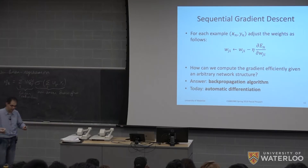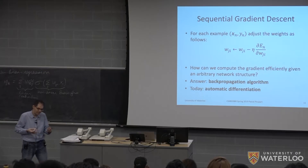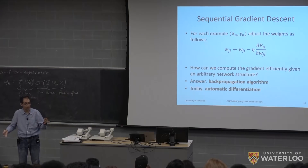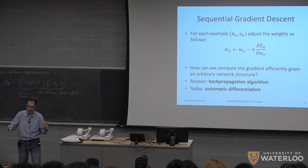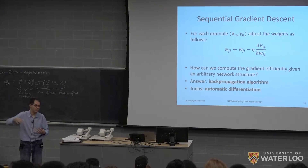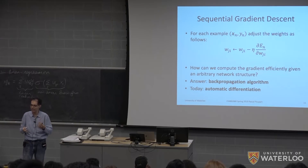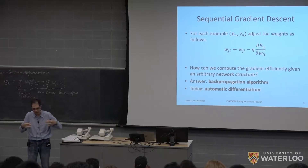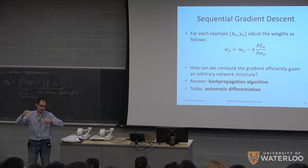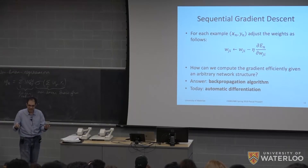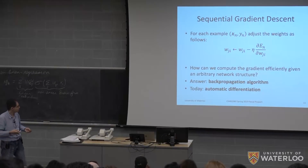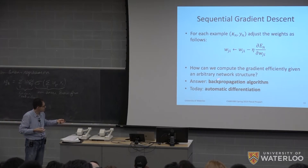To compute the gradient, the question is: is there an easy way of doing this if we have networks with arbitrary architectures? By arbitrary architectures I mean multiple layers, different types of activation functions, and edges that might not connect every pair of nodes — skip connections, connections that go anywhere inside the network. The backpropagation algorithm is the answer from a computational perspective.